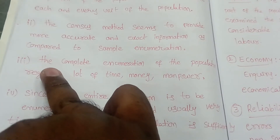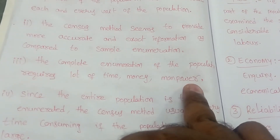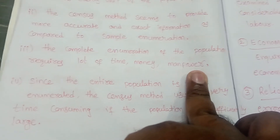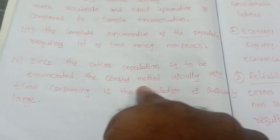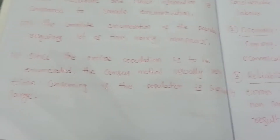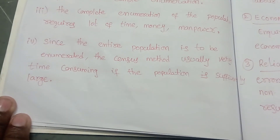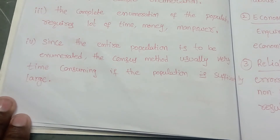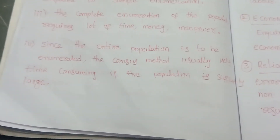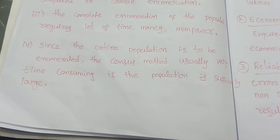Third point: complete enumeration of the population requires a lot of money, time, and manpower because we are using the total population. Fourth point: the census method is very time consuming if the population is large. For example, if I am calculating the average percentage of all second-year agriculture students across India, it is a difficult task and takes so much time using the census method.